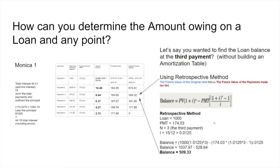So we really have three ways now to figure out the outstanding balance: we can use the amortization table, we can use the retrospective method, or we can use the prospective method to find out how much is owing at any given moment in time. The prospective and retrospective methods do exactly the same thing — you only need to use one.